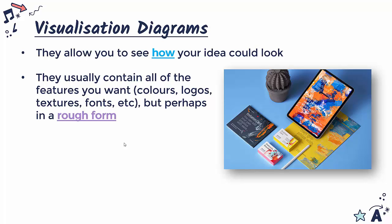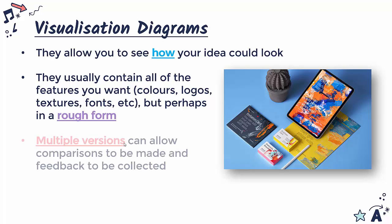Usually you'll contain in your diagram all the features you want, and you're pretty close to deciding exactly how you want your product to look. You'll include things like your color scheme, any logos you've decided on, textures, fonts, and so on. You want it to look fairly realistic and well-finished, but it's still a little rough — it's not going to be perfect at this stage because you haven't started yet.